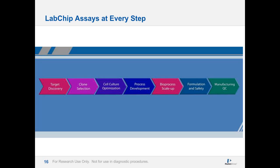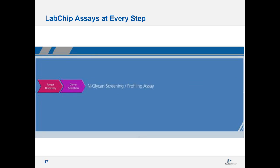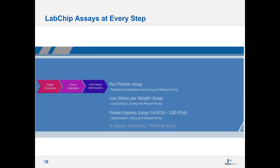This slide describes the biotherapeutic product pipeline and its different stages: target discovery, clone selection, cell culture optimization, process development, scale-up, formulation, safety, manufacturing, and QC. We develop assays to be useful and provide quality at each step along this process. For target discovery and clone selection, we have an N-glycan assay screening and profiling assay to look at the glycan structures of your products.